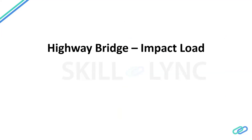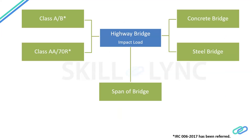Now let us see how the impact load for highway bridges has been computed. The impact factor may vary based on these parameters. The left side shows class A, class B, class AA, and class 70R — these are the vehicle types. Based on the vehicle type, the impact factor varies. The other component is the span of the bridge — based on the span, the impact factor varies. And based on the material of the bridge, mainly the superstructure material, the impact factor also varies.